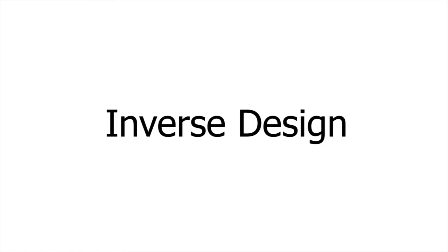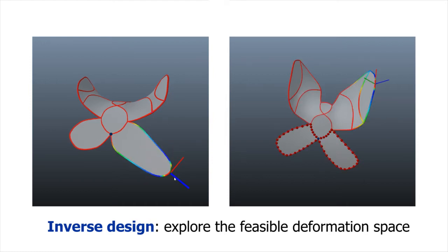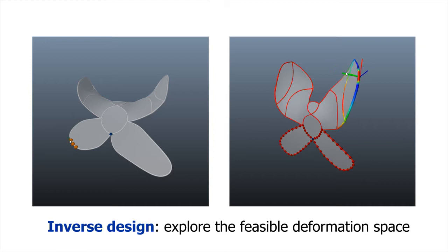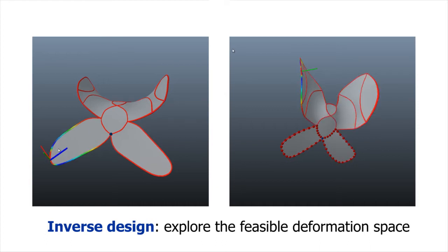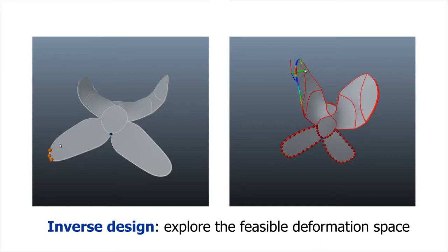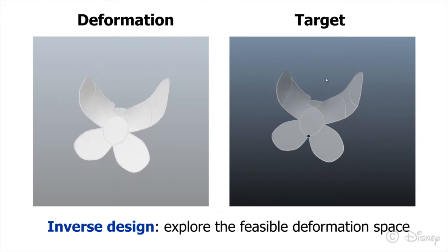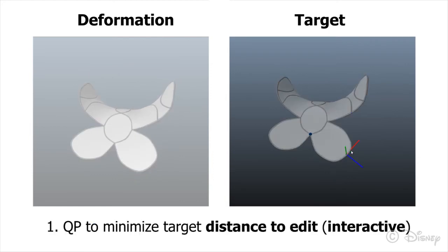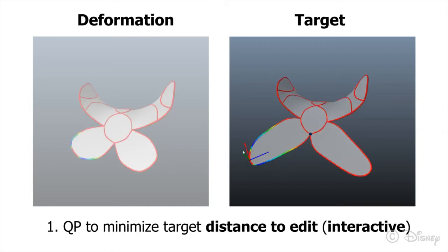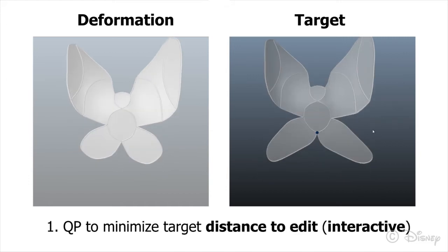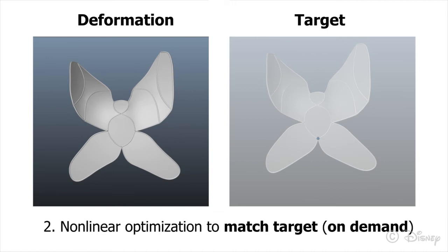Inverse design: In addition to forward exploration of the design space, our approach also allows the user to directly edit the geometry of the equilibrium shape. Our method automatically computes design parameters that approximate the desired change in the equilibrium shape as closely as possible. Inverse design is based on sensitivity analysis and proceeds in two steps: the user iteratively defines a desired edit and a constrained quadratic problem is solved in real time to find the closest feasible target shape. Once the user is satisfied with the target, the full nonlinear optimization problem is solved.